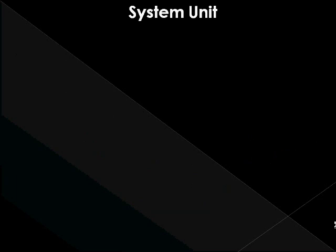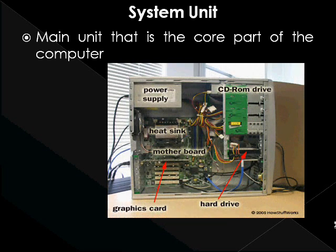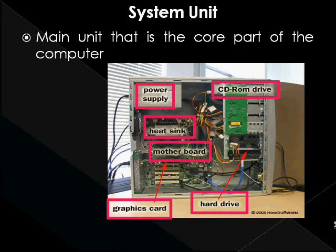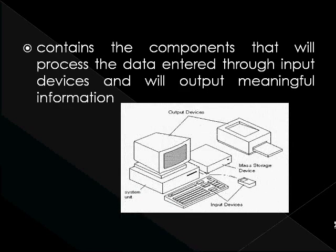System unit. A system unit, also known as a main unit, is the core part of the computer. It is the main body of a desktop computer, typically consisting of a metal, or rarely plastic, enclosure containing the motherboard, power supply, cooling fans, internal disk drives, and the memory modules and expansion cards that are plugged into the motherboard, such as video and network cards. A system unit contains the components that will process the data entered through input devices, and will output meaningful information as clearly illustrated in the figure. In the next subsection, you will get the opportunity of having a better understanding about the main units of a computer in an orderly way.